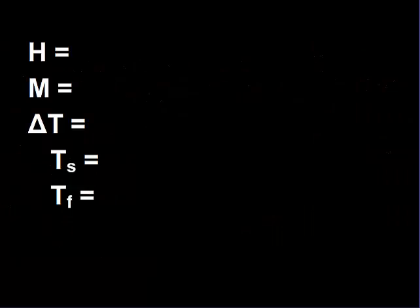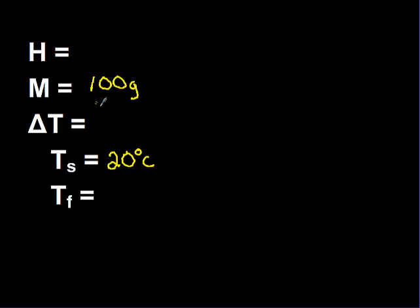This is the third in our series of working out heat problems. We've already done mass and change in temperature. What if I have a problem where I need to solve for a starting or final temperature? Let's say I have a starting temperature of 20 degrees Celsius, a mass of 100 grams, and I'm adding 1,000 calories of heat. My problem asks for the final temperature of the water.